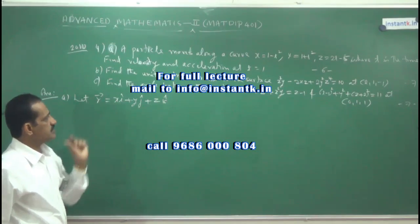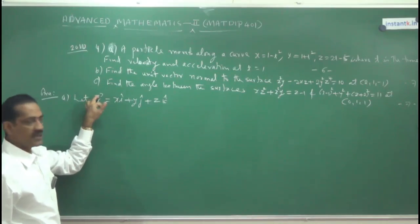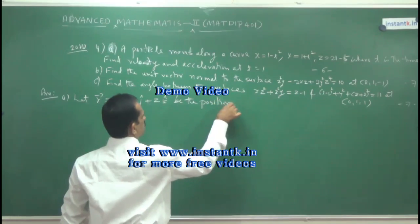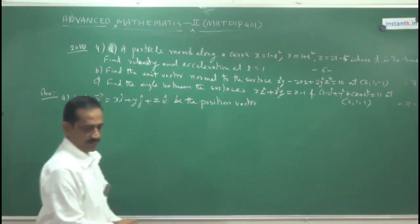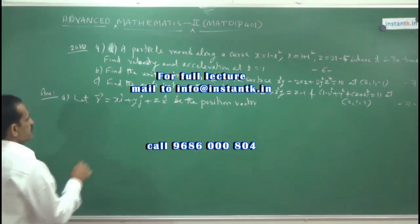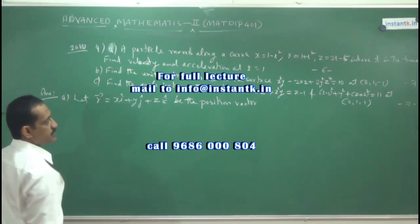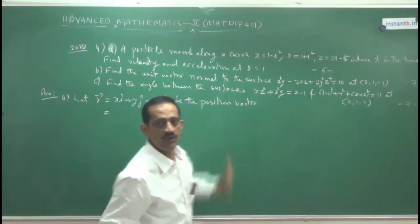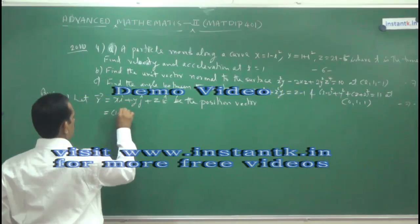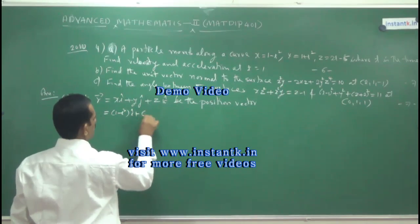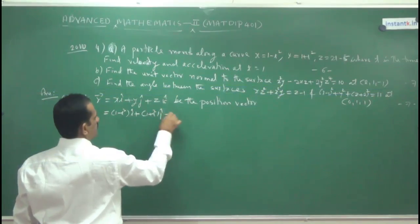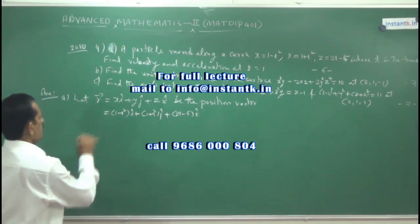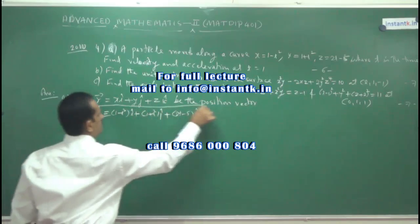For unit vectors you put a cap on top; for the vector you put an arrow mark. Let r be the position vector of the moving particle. Now write x, y, and z in terms of t. So vector r = (1 - t²)·î + (1 + t²)·ĵ + (2t - 5)·k̂. This is vector r.